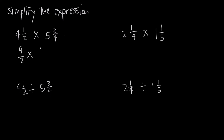Then we multiply that by whatever we get when we change 5 and 3 fourths to an improper fraction. So 4 times 5 is 20, and 20 plus 3 is 23, giving us 23 fourths. Now this is just a simple fraction multiplication problem. We multiply across the numerators: 9 times 23 gives us 207, and 2 times 4 gives us 8. We can't reduce this fraction, so 207 over 8 is our answer.